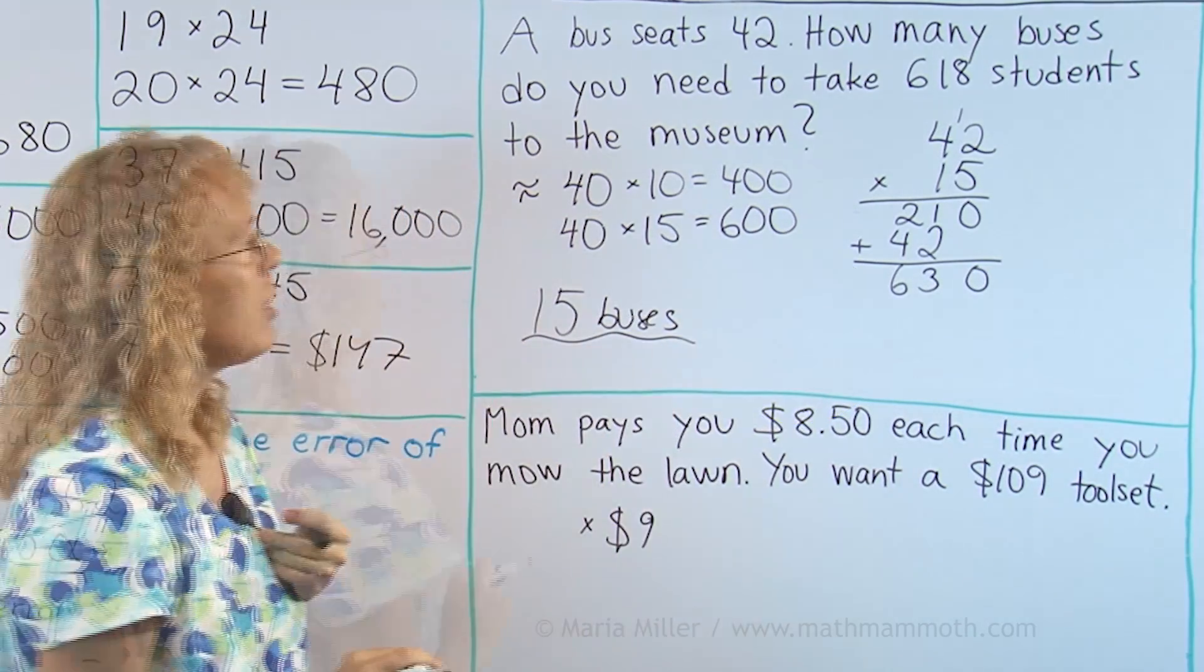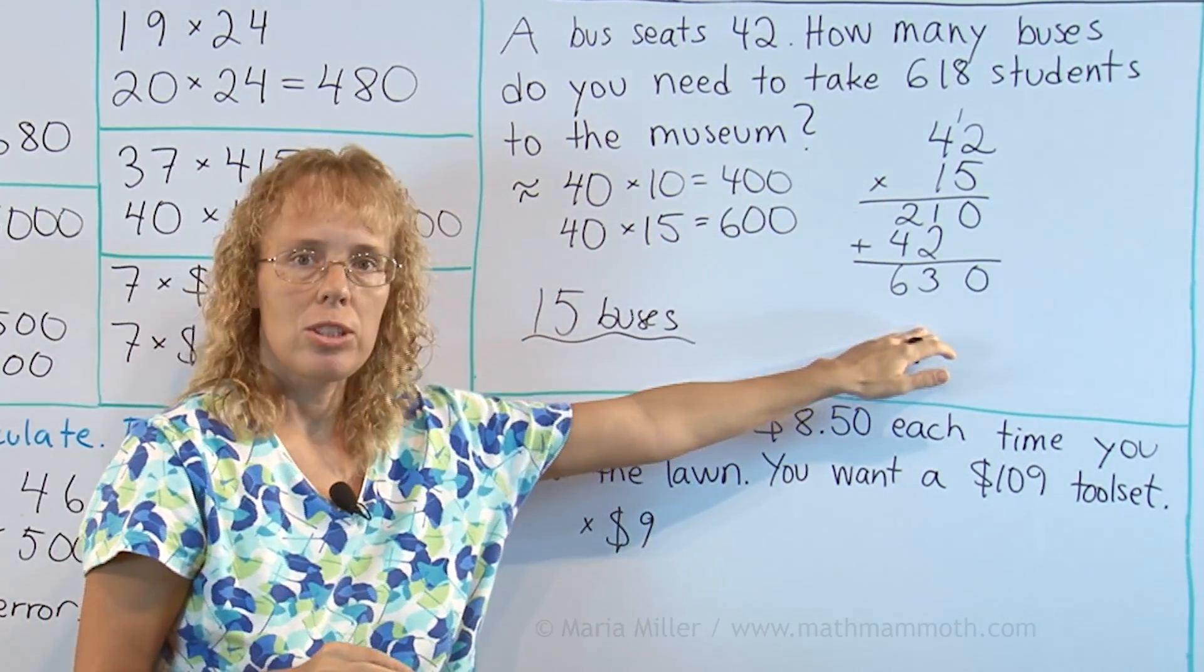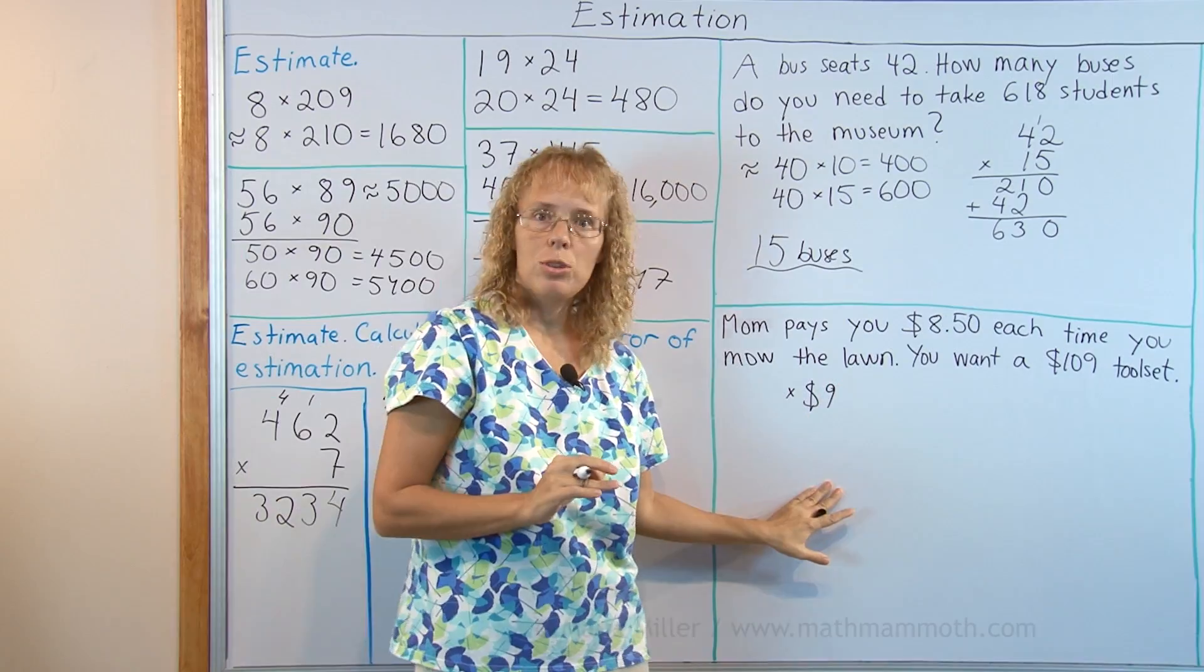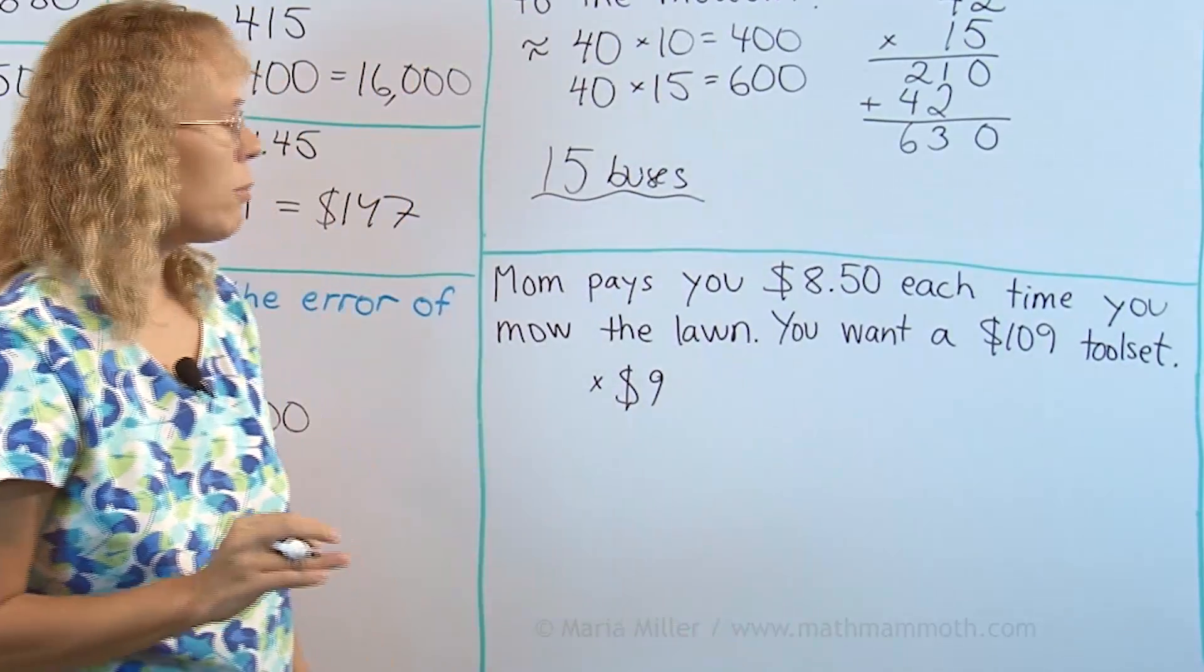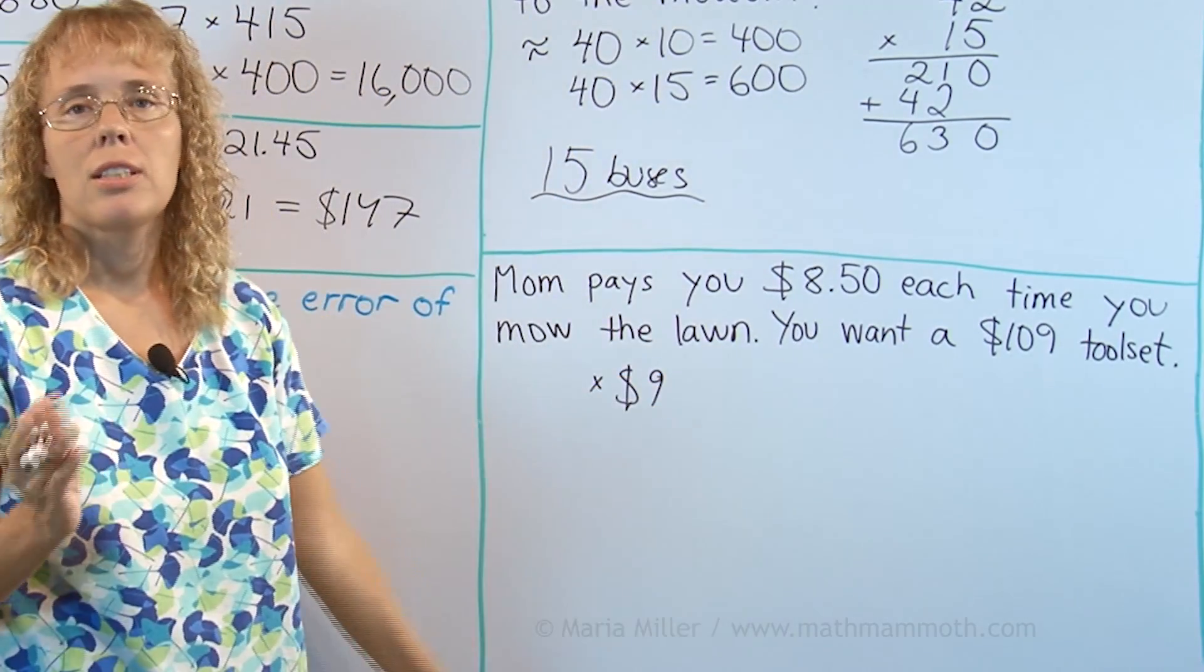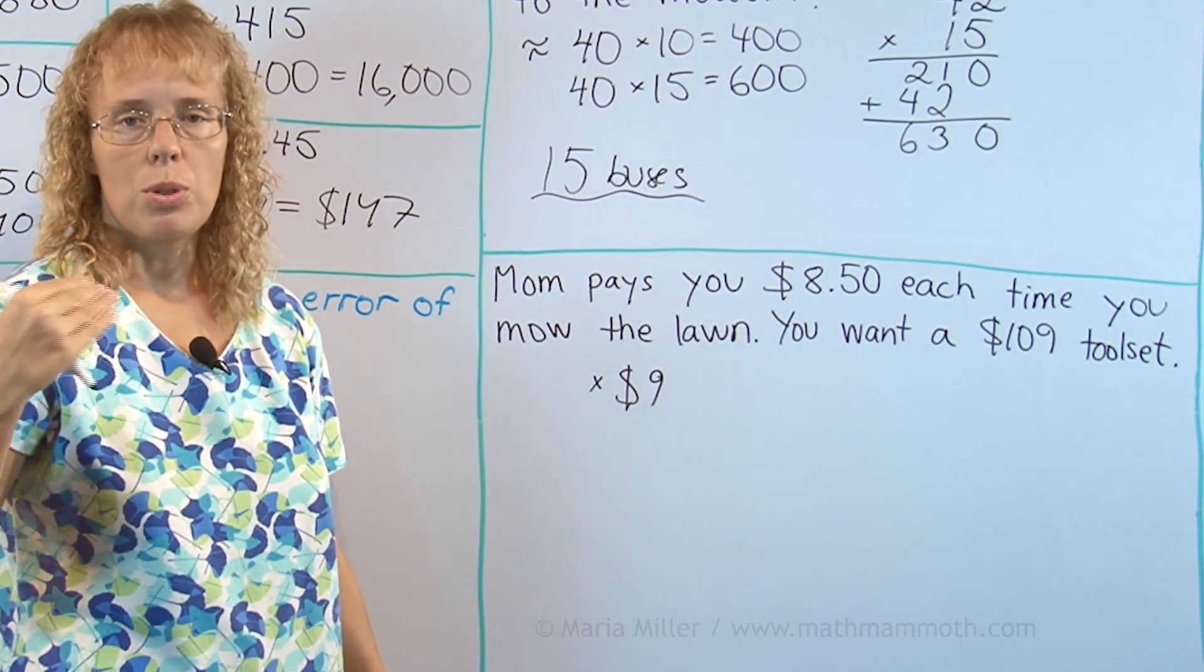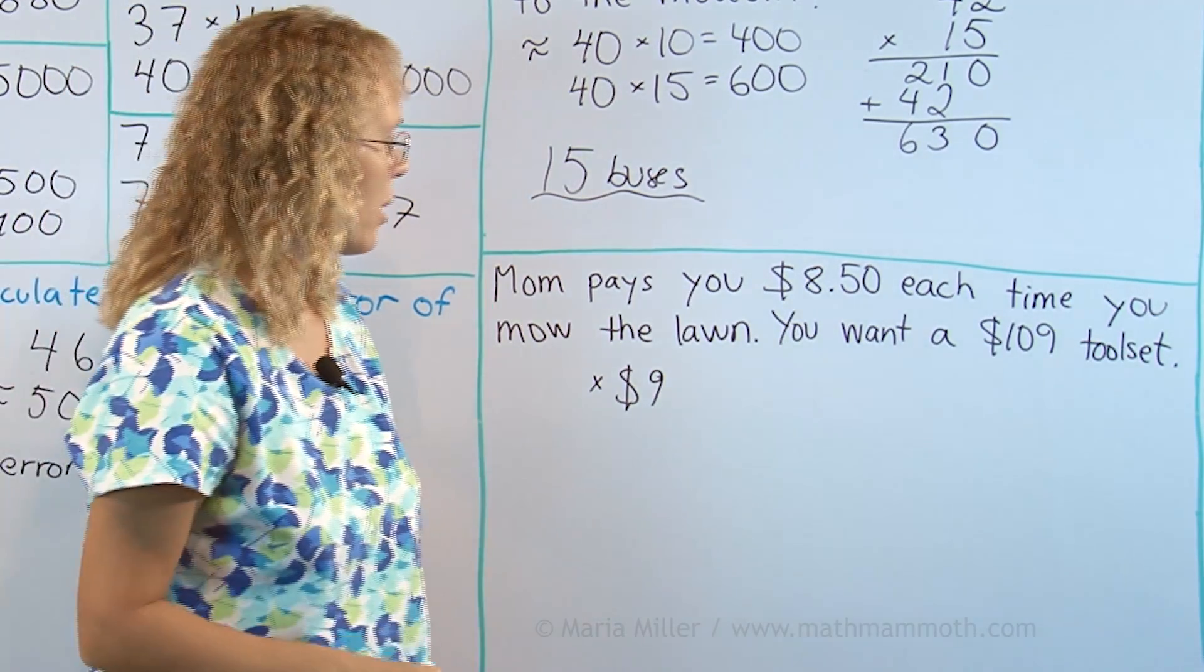We didn't need to do any difficult division. We just estimated and checked the estimation by multiplying and we're done. Another one that we can use estimation with. Mom pays you $8.50 each time you mow the lawn and you want to buy a toolset that cost $109. Question is how many times should you mow the lawn until you have saved that much money?